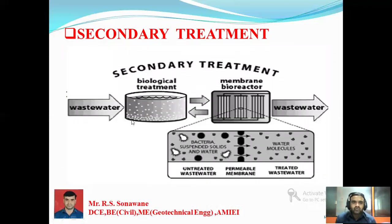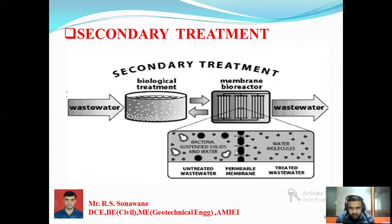In secondary treatment, wastewater from the first stage comes from the primary sedimentation plant into a biological unit. A membrane bioreactor is provided — the membrane acts as a small-pore filter. Bacteria are provided before water enters the membrane. Water passing through the membrane becomes treated water — the untreated wastewater is permeable through the membrane and comes out as treated water on the other side. These are the secondary treatment units, and the water goes further for tertiary treatment.